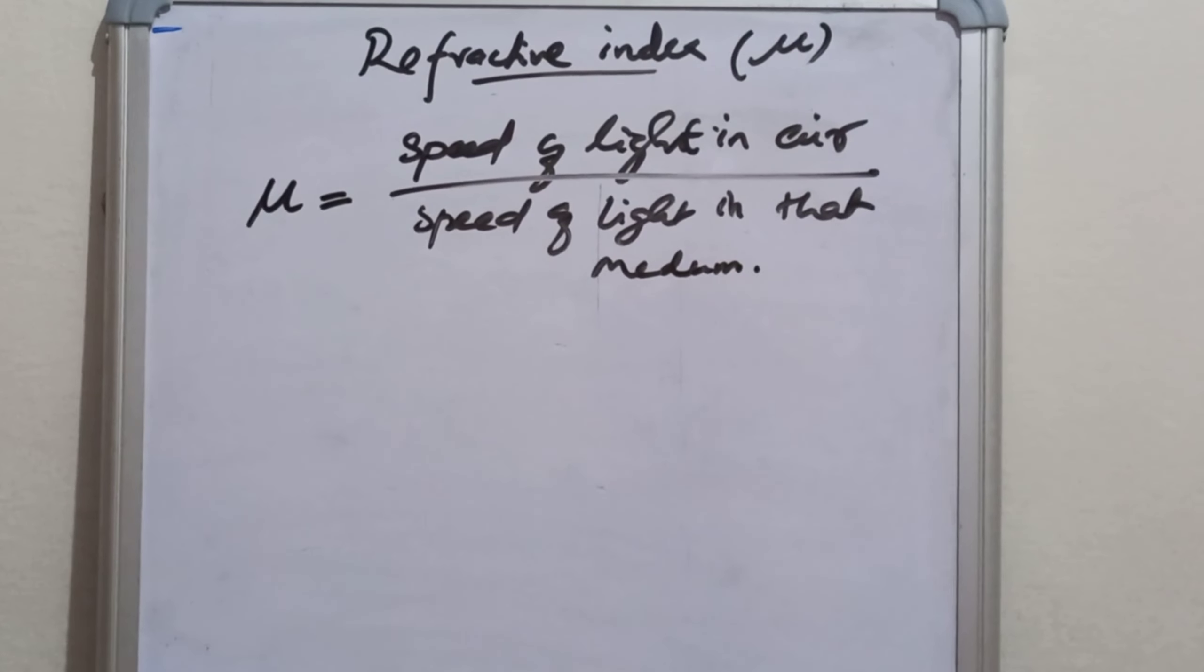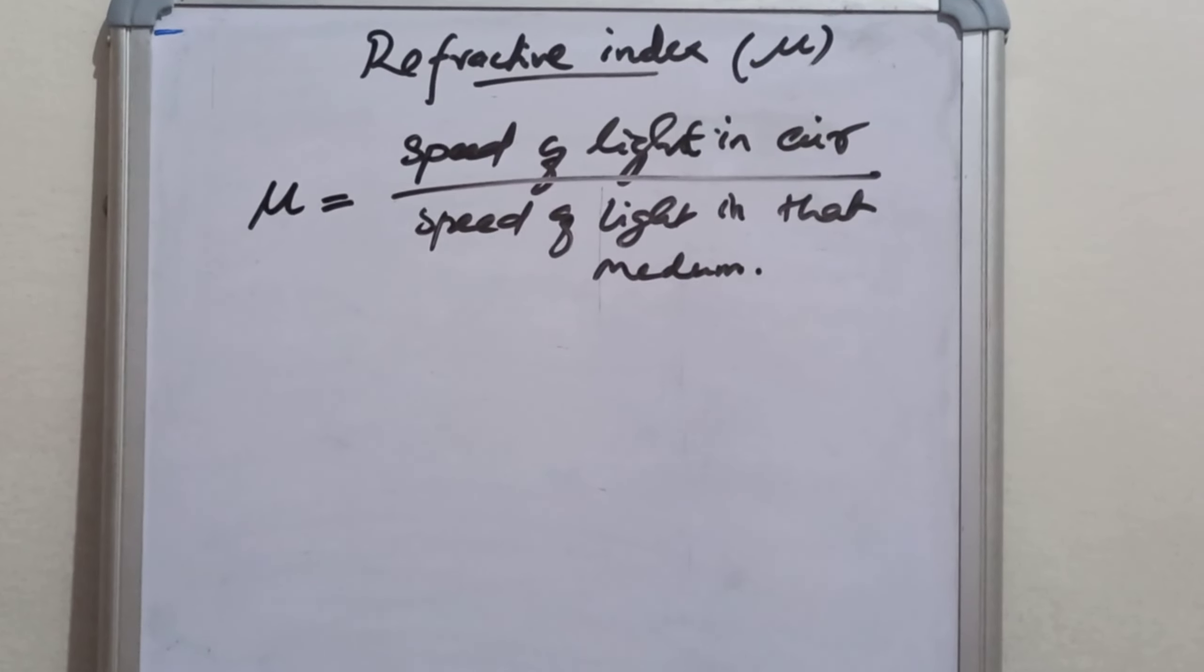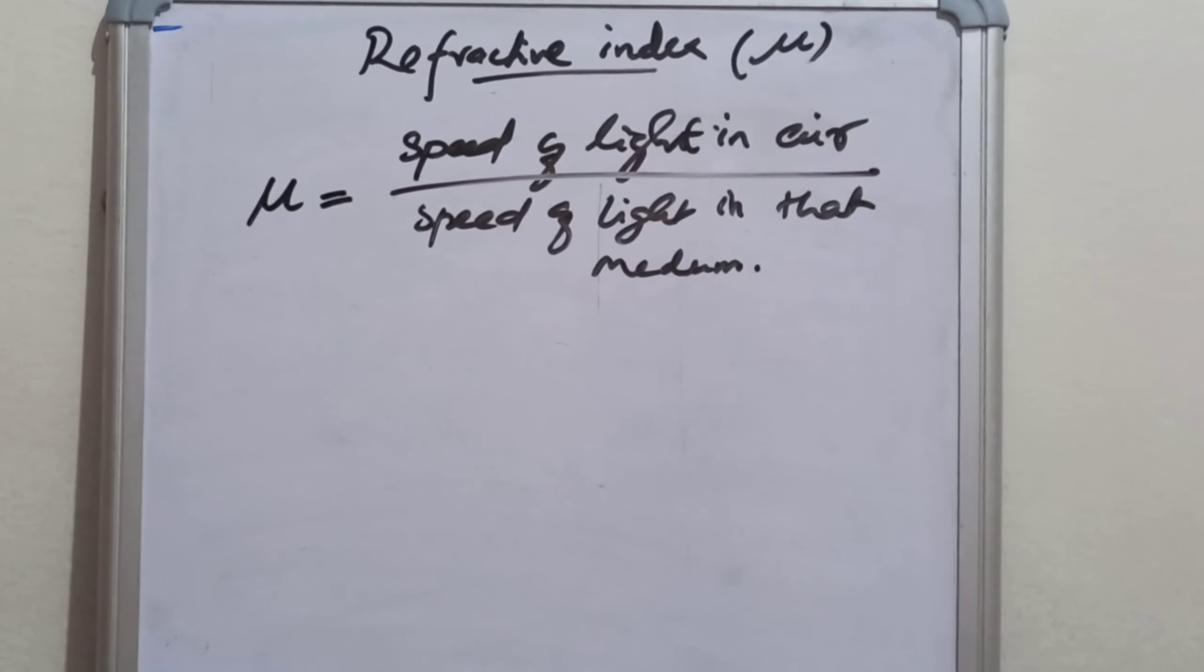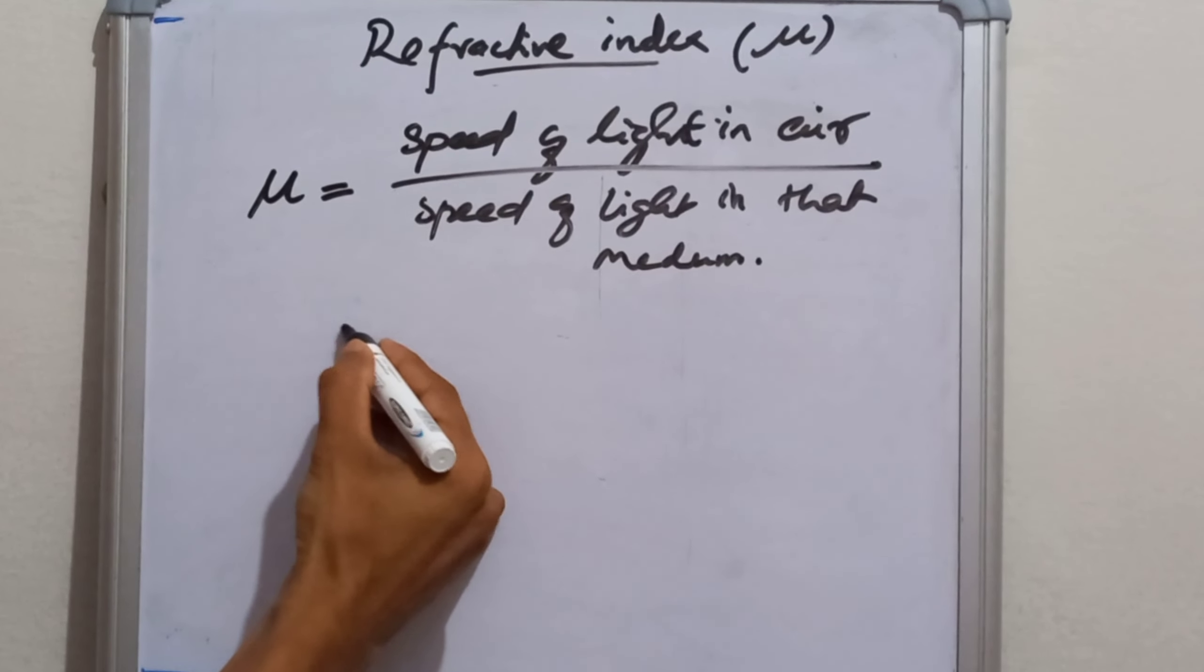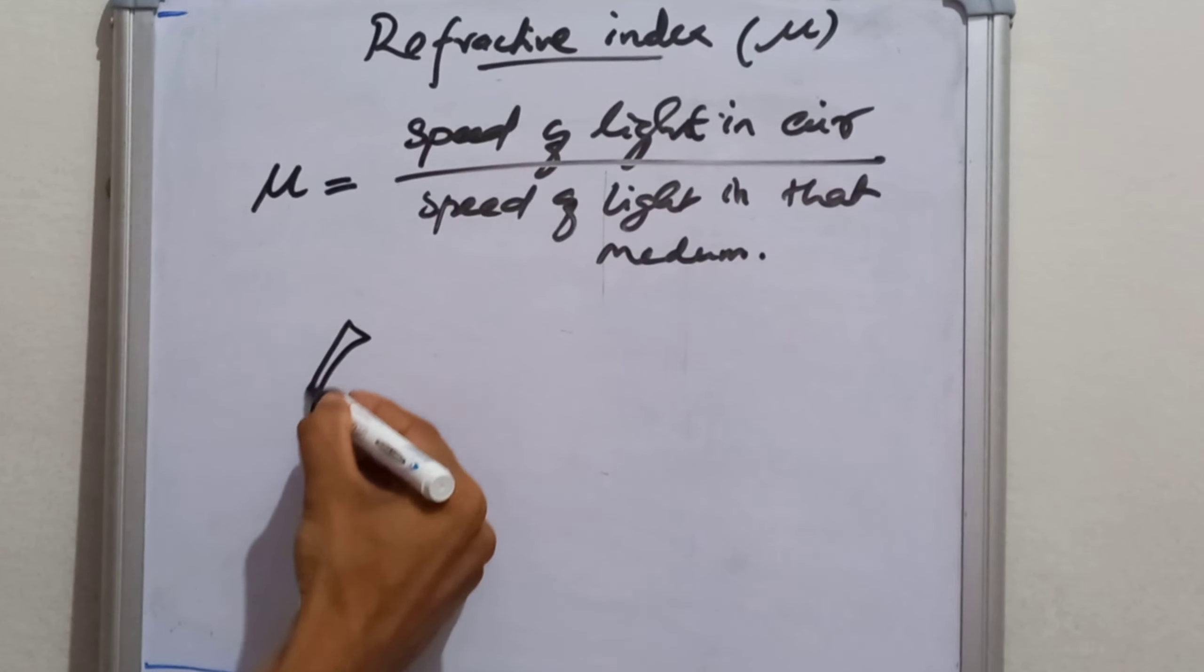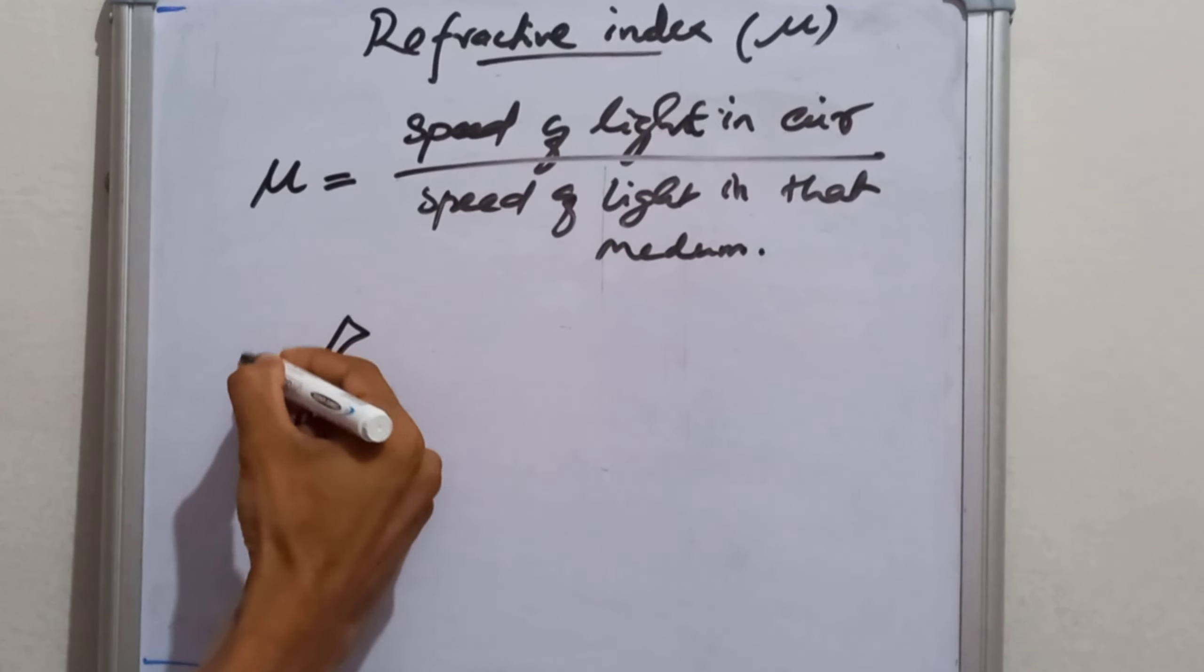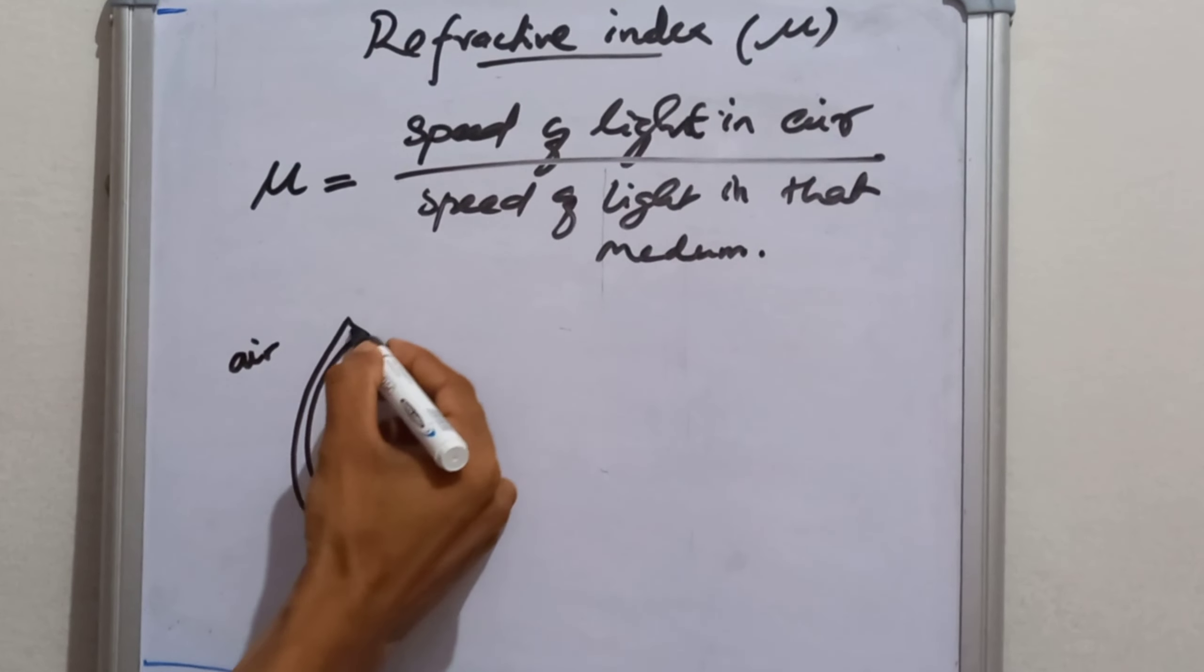So for example, if you want to know the refractive index of cornea, then we have to consider two surfaces. The first will be cornea here, and then here is the air and this is the cornea.